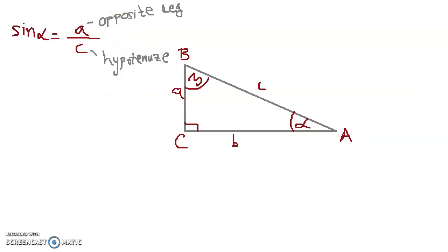And this is hypotenuse. Let's see what will happen with beta. So if we want to define sine of angle beta, opposite leg for angle beta would be B, hypotenuse is C. So this is our definition of sine function. Let's go to definition of cosine function.